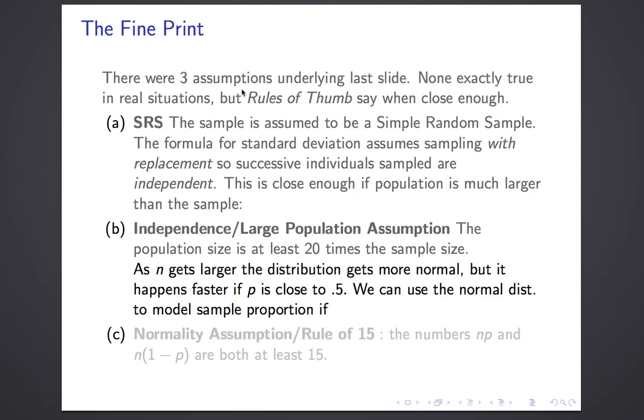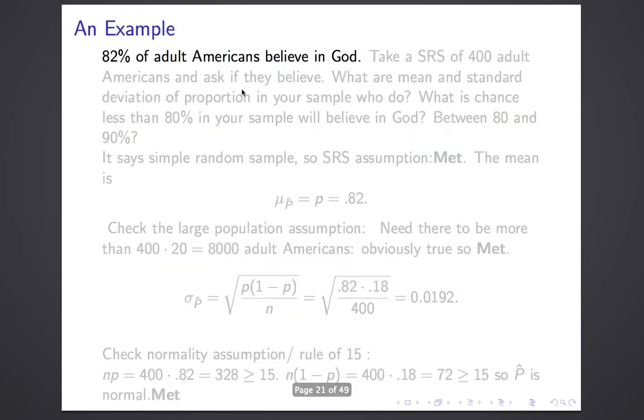Finally, the basic fact is that as N gets bigger, as your sample size gets bigger, the distribution of P-hats gets closer and closer to normal. It does so faster if P is sort of middling. If P is very close to 1 or to 0, it takes longer. So to combine those cases in a simple way, we use the rule of 15. You can assume your distribution is normal if the numbers N times P and N times 1 minus P are both at least 15.